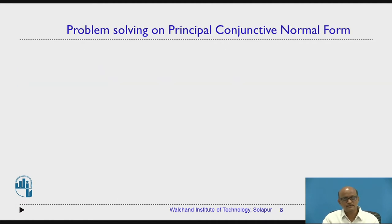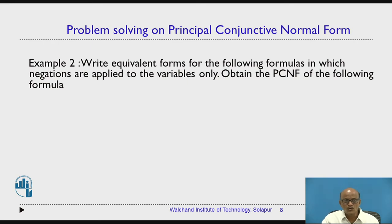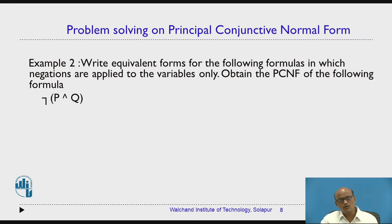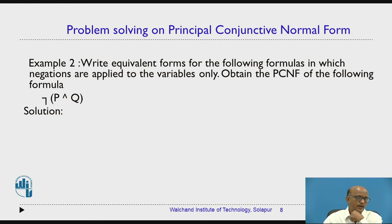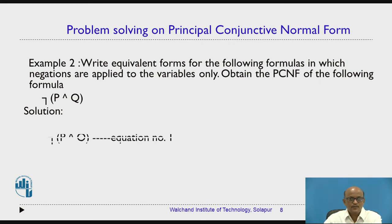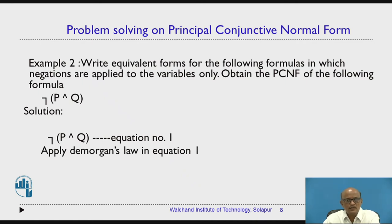Let us focus on example number 2. The question is: write equivalent forms for the following formulas in which negations are applied to the variables only, and obtain PCNF of the given formula. The formula is negation of bracket P AND Q. If you take negation inside the bracket using De Morgan's law, it will become negation P or negation Q.